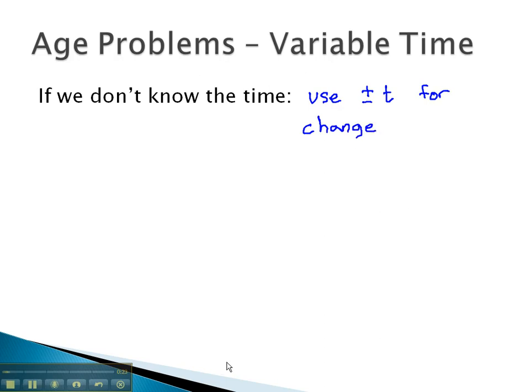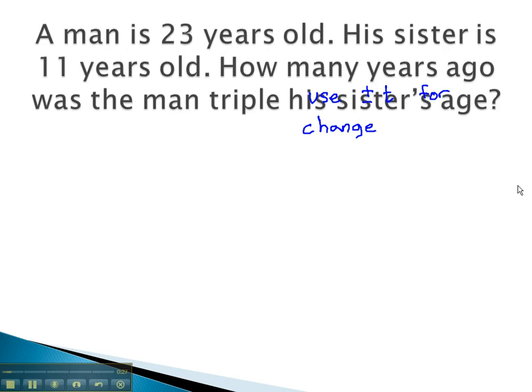Let's take a look at some examples where we see this relationship occur. In this first problem, we're comparing the ages of a man and his sister.